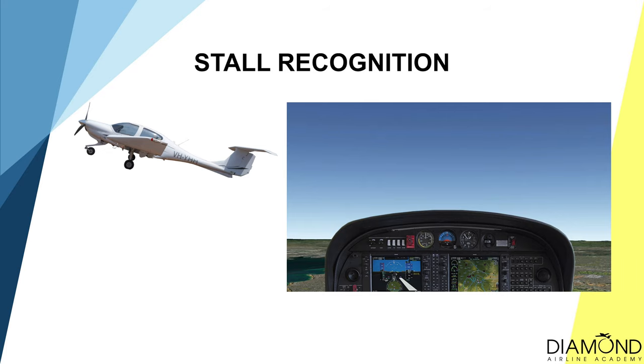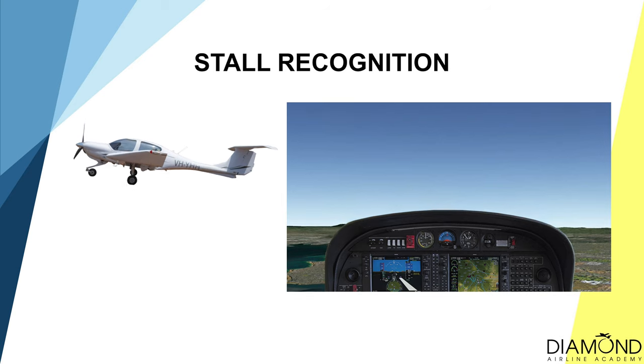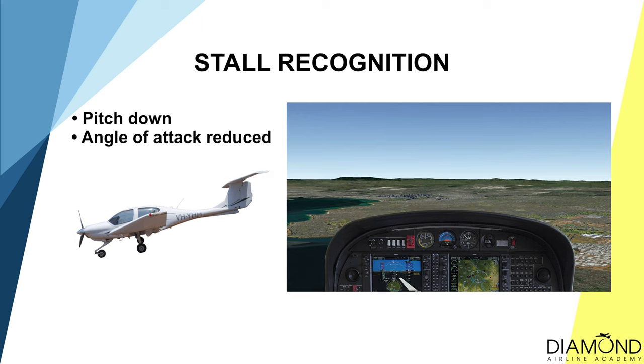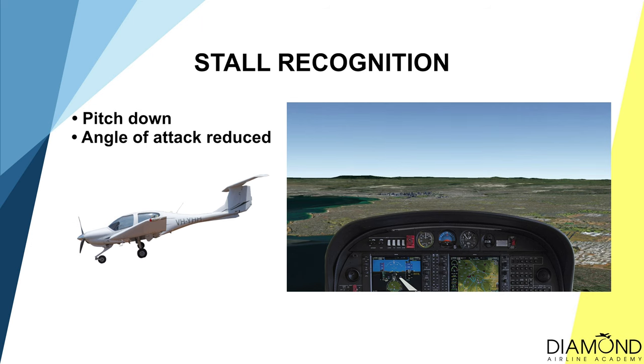One of the biggest myths about stalling is that when an aircraft stalls, it will feel like freefall. But in fact it doesn't. When an aircraft stalls, it will pitch down. Because the aircraft is now pitching down, the angle of attack is reduced. When the angle of attack is reduced below the critical angle, the aircraft will be unstalled. During this process the aircraft loses altitude, and that's how we recognise a stall has occurred — by the sudden pitch-down attitude.